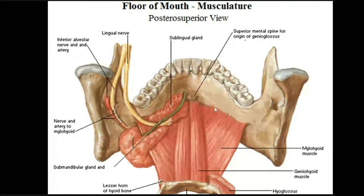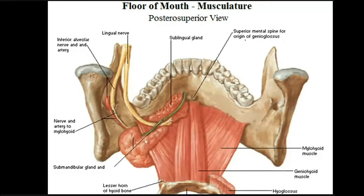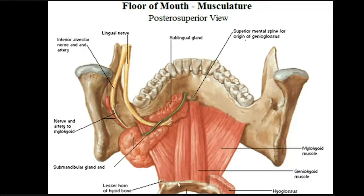Here is the superior surface of the mylohyoid — this is the floor of the oral cavity. We have removed the mucous membrane which covers the floor of the oral cavity to see the muscle forming the floor. This is the superior surface of the mylohyoid, and on each side it becomes attached to the upper border of the body of the hyoid bone.